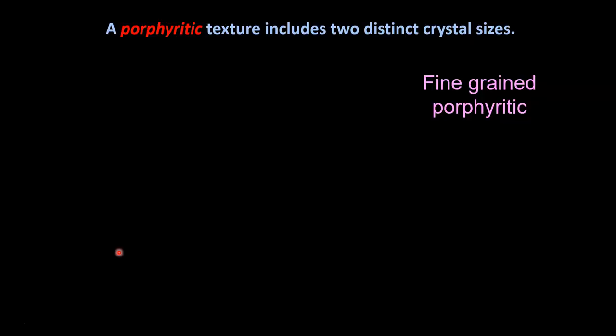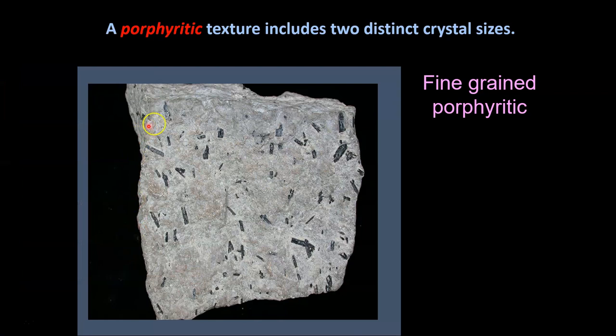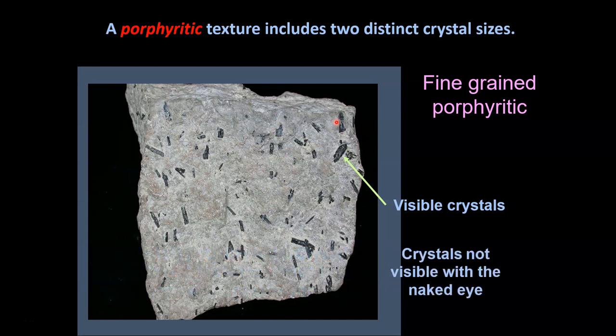Another special type of texture is a porphyritic texture. A porphyritic texture has two different crystal sizes. In a fine-grained porphyritic rock, you can see some crystals — the black crystals visible in hand specimen — and then everything holding those crystals together consists of other crystals that are so small you can't see them; those are non-visible crystals only seen under a microscope. In a fine-grained porphyritic rock you can see one size and can't see the other in hand specimen.